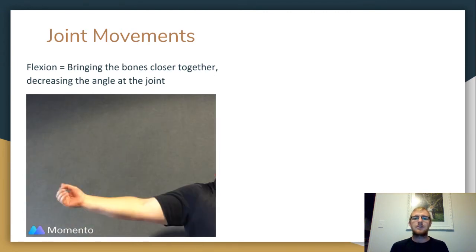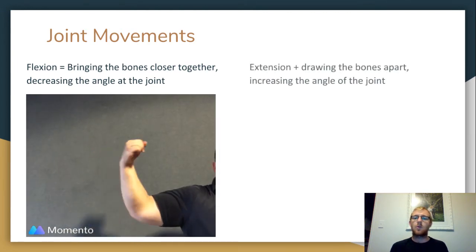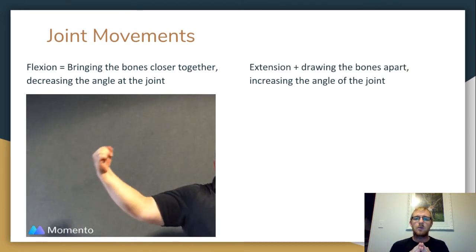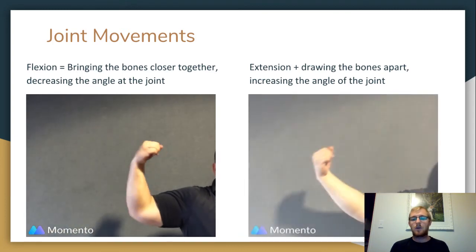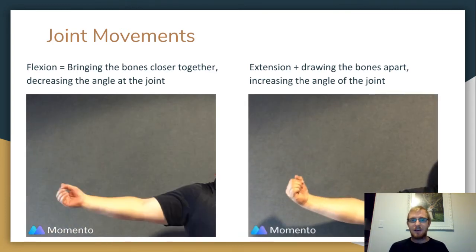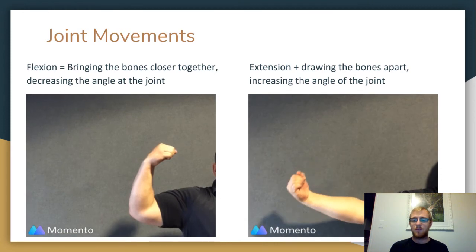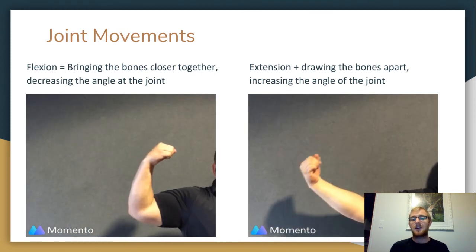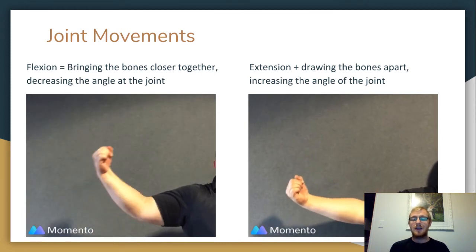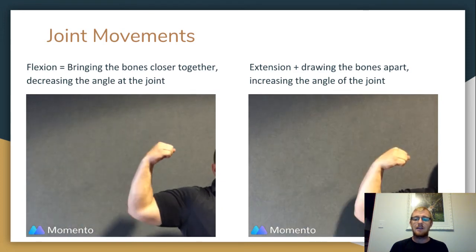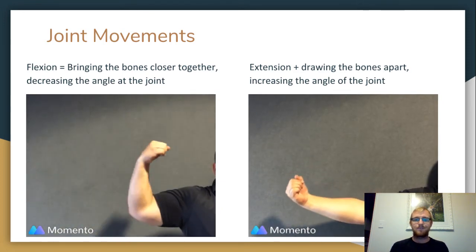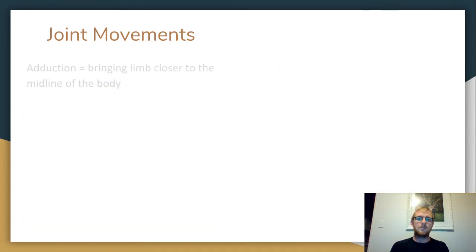The opposite of flexion is called extension. This is when the bones are drawn apart — pulled apart by the muscles — and the angle at that joint is increasing. We can see here an example of extension of the elbow. The forearm and the upper arm start close together and they extend out — the angle at that joint is increasing.